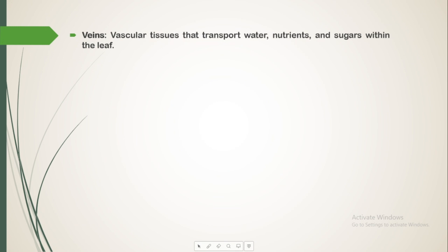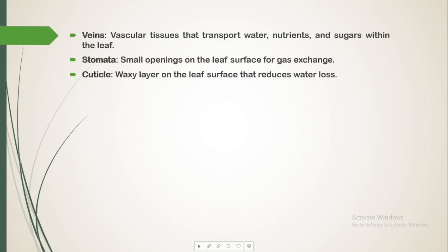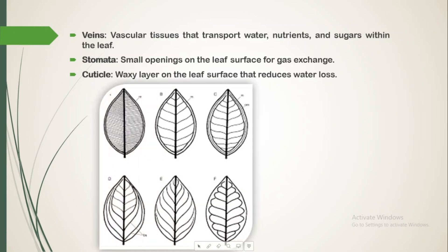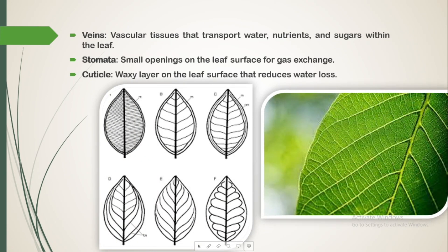Next we have veins — vascular tissues that transport water, nutrients and sugars within the leaf. Then we have stomata, small openings on the leaf surface for gas exchange. And we have the cuticle, which is a waxy layer on the leaf surface that reduces water loss. As you can see in the image, the small line-like structures are the veins, and we also have stomata useful for gaseous exchange, and the cuticle as the waxy surface layer.